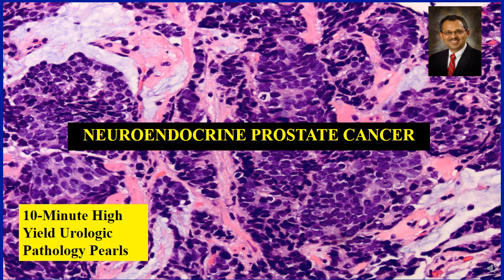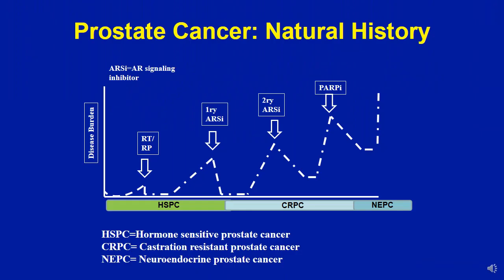There are two important issues to understand when we talk about neuroendocrine prostate cancer. First is clinically significant neuroendocrine differentiation, and the second is neuroendocrine expression demonstrated by neuroendocrine markers. When we talk about clinically significant neuroendocrine prostate cancer, we are really talking about a terminal stage prostate cancer — almost like an end-stage, biologically significant prostate cancer.